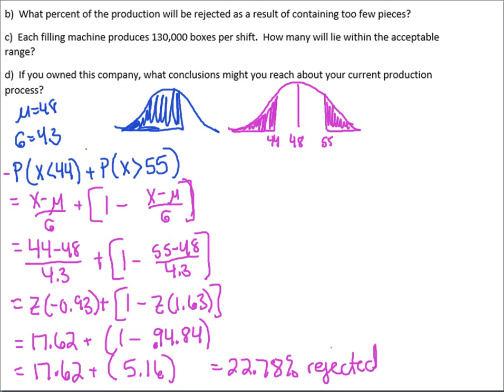Here's a little bit of common sense. So C reads, if each filling machine produces 130,000 boxes per shift, we're going to quote these in boxes, how many boxes will lie within the acceptable range?